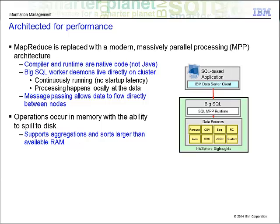BigSQL is designed for performance. It replaces MapReduce using a modern massively parallel processing, or MPP, architecture. The compiler and runtime are written in native code — C or C++ — so it is much faster. The SQL engine pushes down the processing to the same node that holds the data, so all the processing happens locally at the data. There is also no startup latency. The daemons are continuously running. Operations occur in memory, and if necessary, it can spill over to disk for processing. This allows for support of aggregations and sorts much larger than the available RAM.